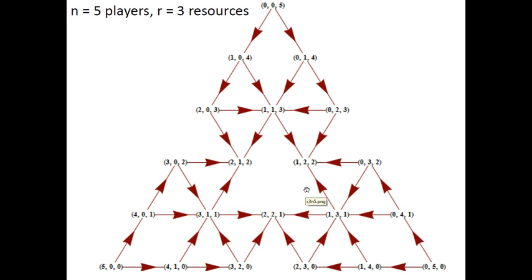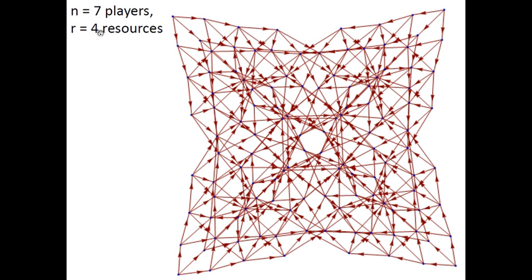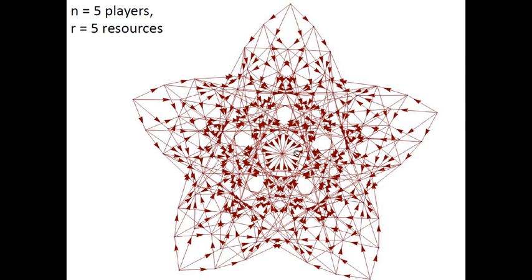You can convince yourself of this: in a rough sense, players are getting more and more evenly spaced over resources as they do better response updates. More precisely, the number of pairs of users of the same resource decreases with every better response update. This is just one system with five players and three resources. If we change the number of players or resources, we get different state space pictures, some of them quite pretty — like seven players and four resources. The reason this looks interesting is that it really should be drawn in three-dimensional space.